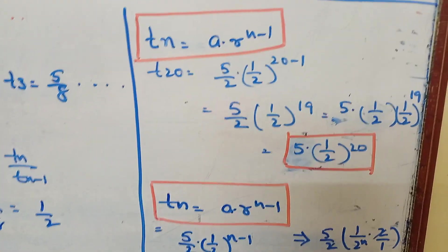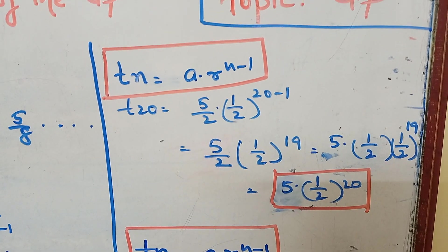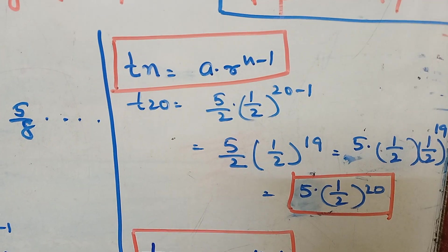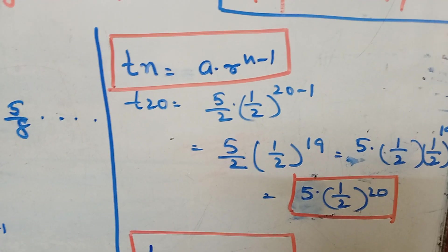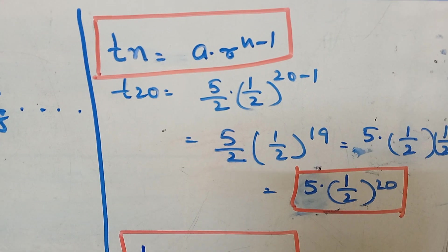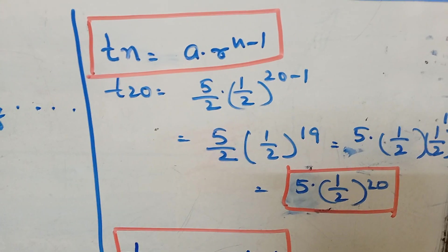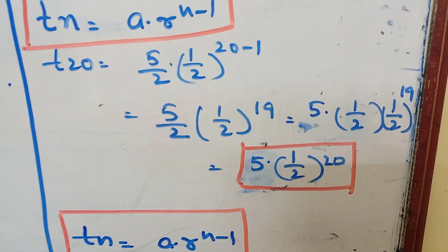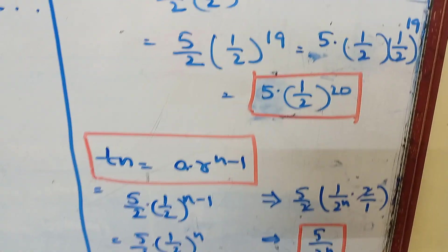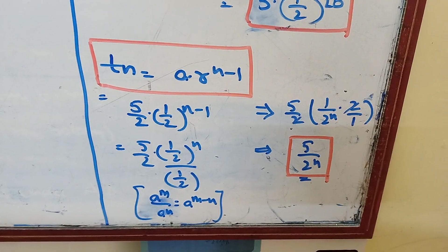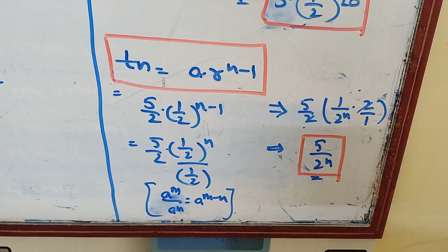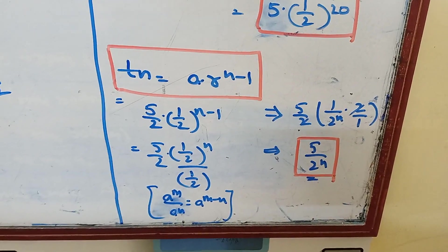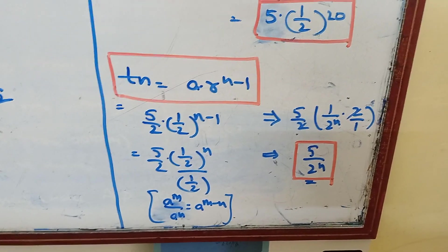Next, we need to find t20 value. What is tn value? tn equals a into r power n minus 1. What is t20? t20 equals wherever n is there, replaced by 20. So a value is 5 by 2 into r, we got 1 by 2, n is 20 minus 1. So simplify. We will get 5 by 2 into 1 by 2 power 20.